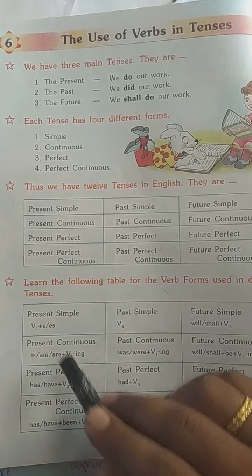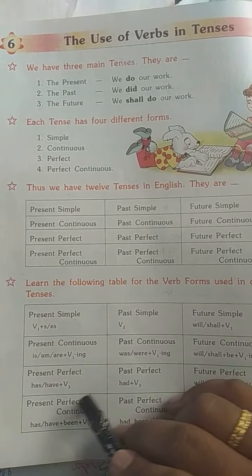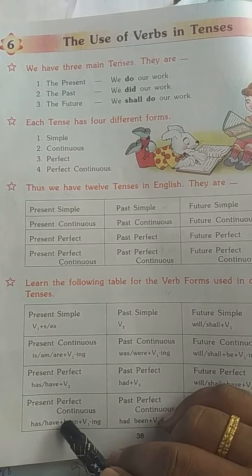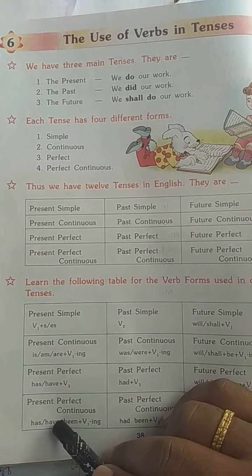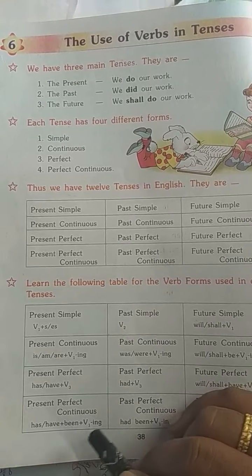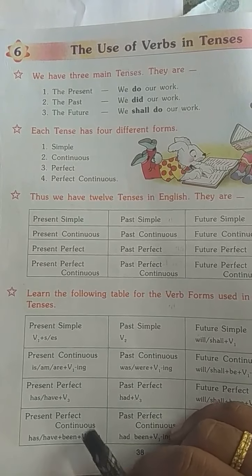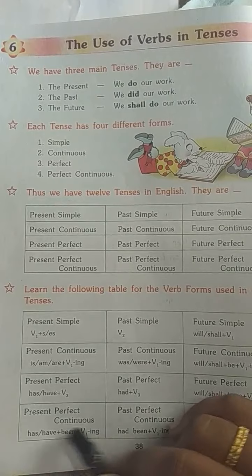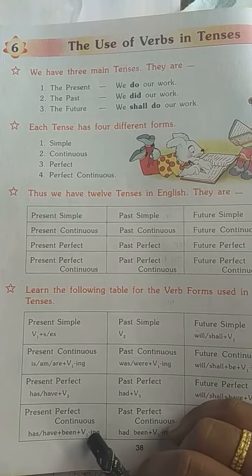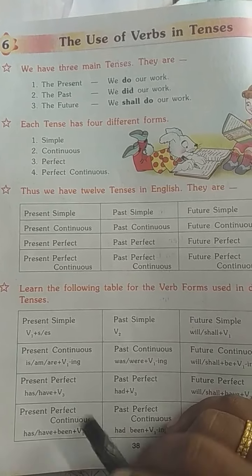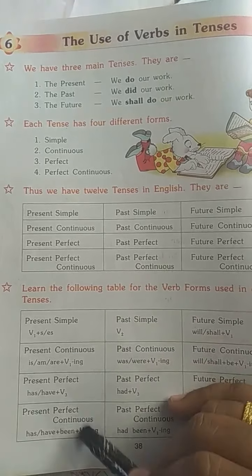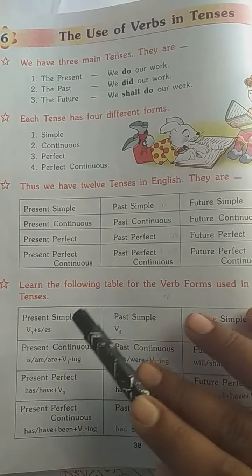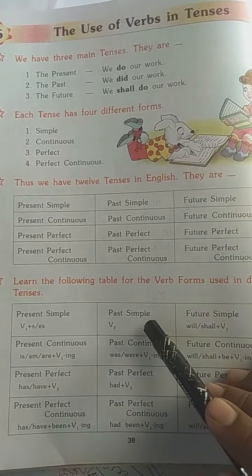Then present perfect has 'have' or 'has' plus V3 (verb ka teesra roop). Am/is/are ki jagah have/has aayega aur verb ka teesra roop aayega. Then present perfect continuous mein have/has plus been plus V1 plus 'ing' aayega — kyunki yeh continuous aur perfect continuous hai.